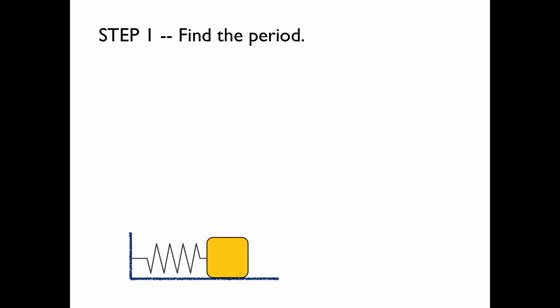First we'll find the period. We know the mass and the spring constant, so to find the period we just use this formula. We plug in what we know, and we get a period of 0.56 seconds.